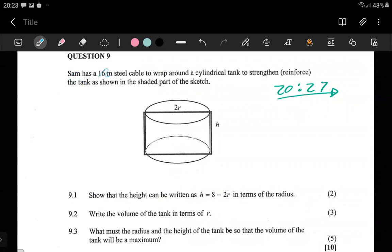Sam has a 16 meter steel cable to wrap around a cylindrical tank to strengthen it. The tank is shown in the shaded sketch. We know everything should add up to 16.